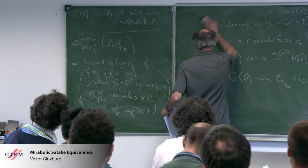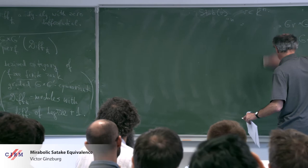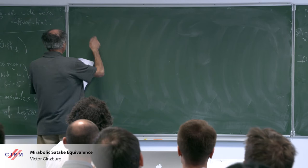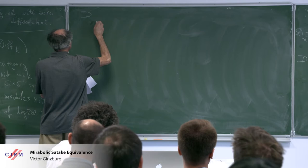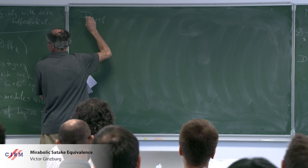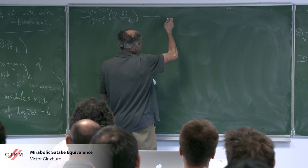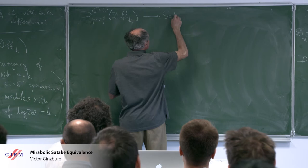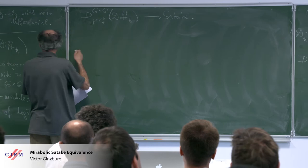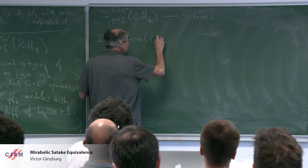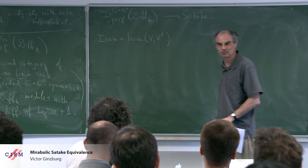I defined a functor sending our mirabolic constructible category to the usual Satake category. On the dual side, we have a functor from the category perfect G cross G prime of Diff to Satake in the dual interpretation. The functor is defined as follows: inside Hom, we have a subset called Isom, which is isomorphisms from V to V prime — those maps which are actually isomorphisms. This is an open dense subset inside Hom. If we identify V and V prime with C^N, these are GL invertible matrices and Hom is all matrices.